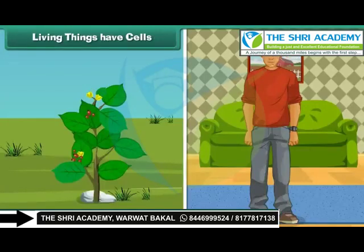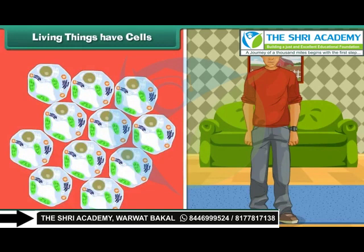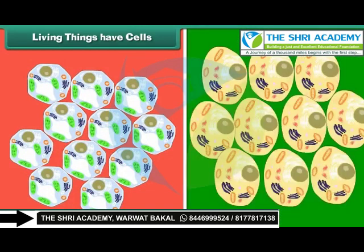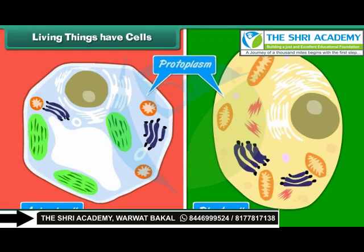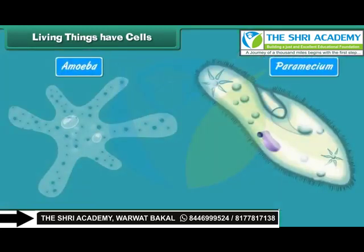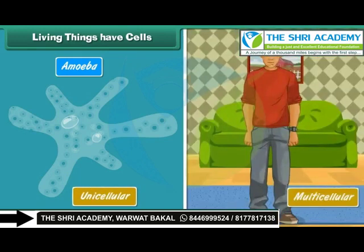Living things have cells. Each living being has a distinct individuality and cannot be broken into two or more independent parts. The body of a living being is made of one or more cells. Cells are considered the structural and functional unit of life, and are made of protoplasm or living matter. Some organisms like amoeba and paramecium are made up of one cell — they are called unicellular. Organisms made up of many cells are called multicellular.